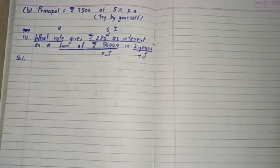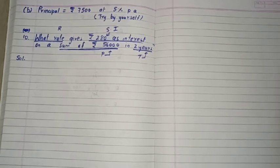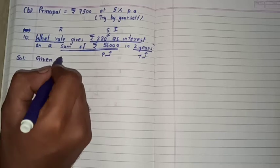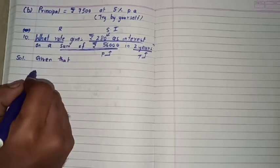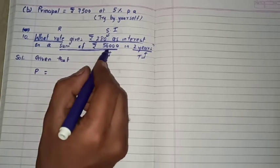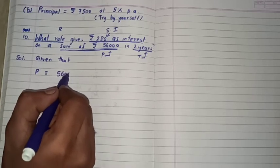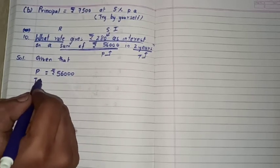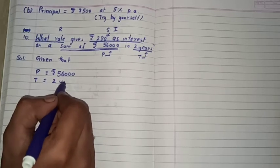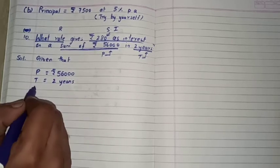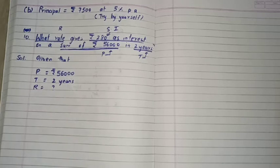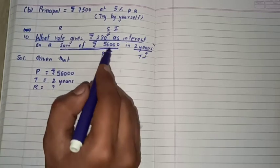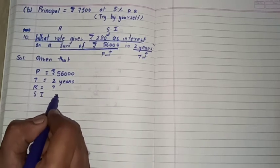Now what we are going to do is we are going to write the given information, yane given that. To sub se pehle likhhenge P, P ka value hai 56,000 rupees 56,000. Uske baad T ka value hai two years time period and R humko pata karna hai to question mark likh lhenge here, haan per R ke jaghaan per.